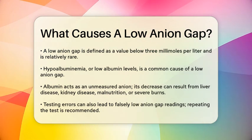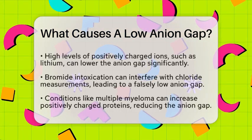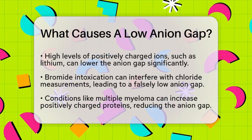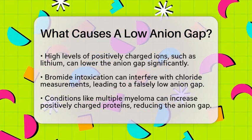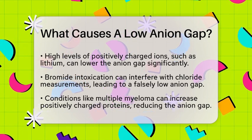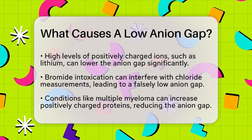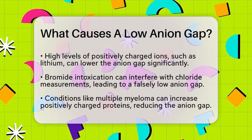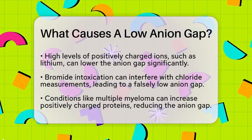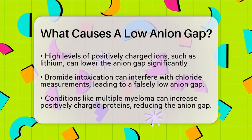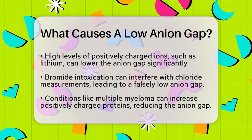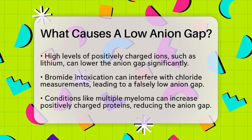High levels of positively charged ions can also contribute to a low anion gap. For instance, lithium toxicity can lead to this condition — when lithium levels in the blood rise, it can lower the anion gap significantly. Bromide intoxication is another factor that can interfere with chloride measurements, leading to a falsely low anion gap. This is important to consider, especially in emergency situations.